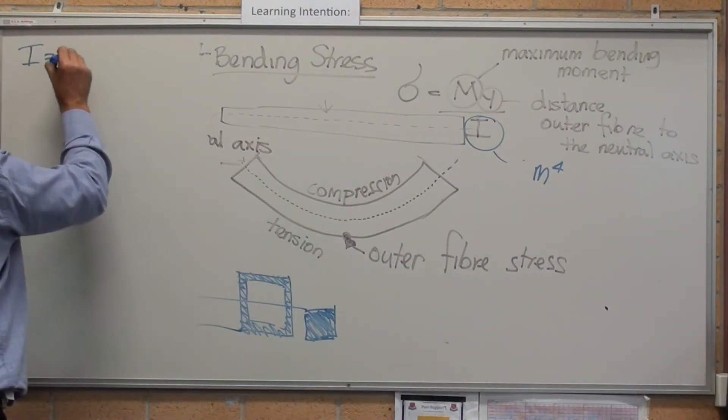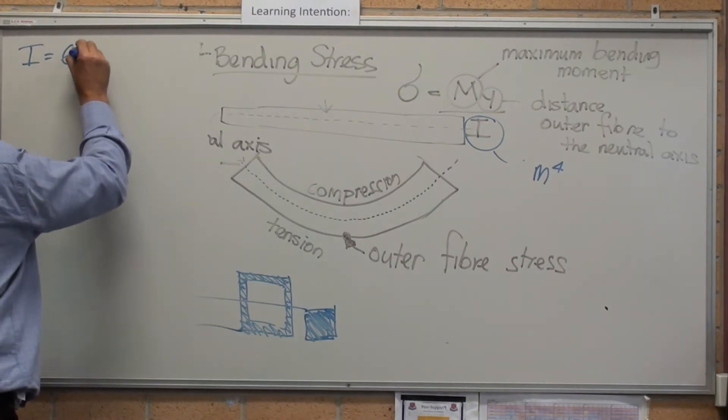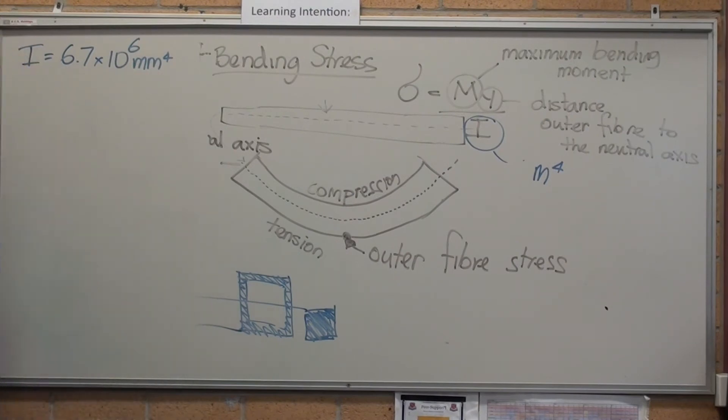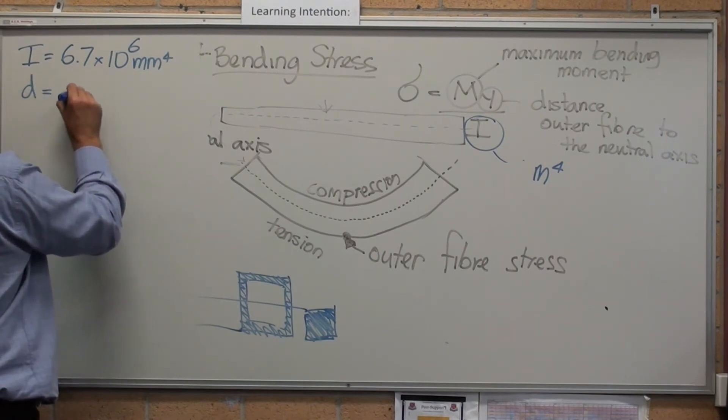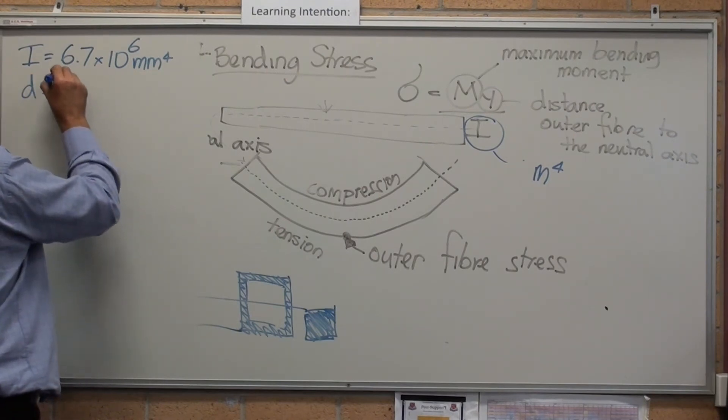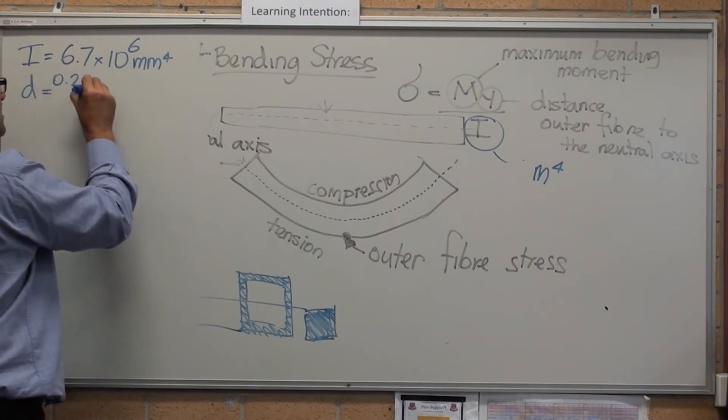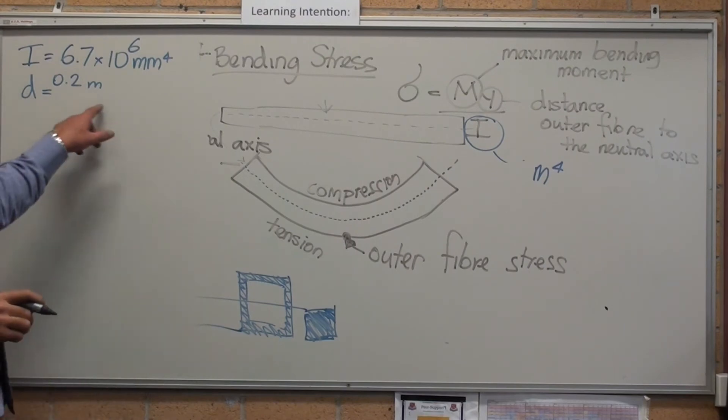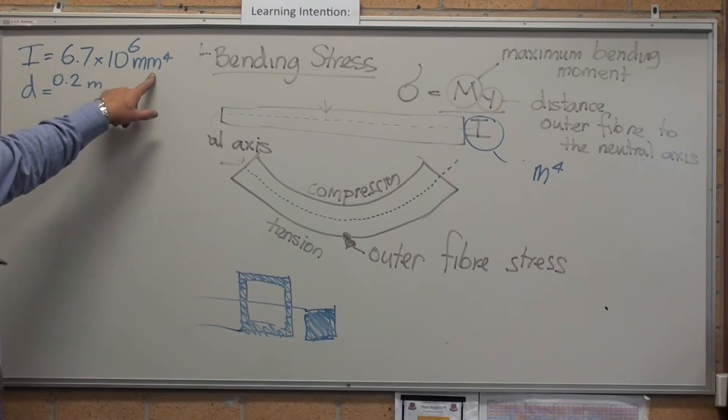And you might have calculations, distance equals 0.2 metres. Temptation is to always work in millimetres, but you need to be basically an engineer and used to working with the maths to get it accurate. If you think about this.